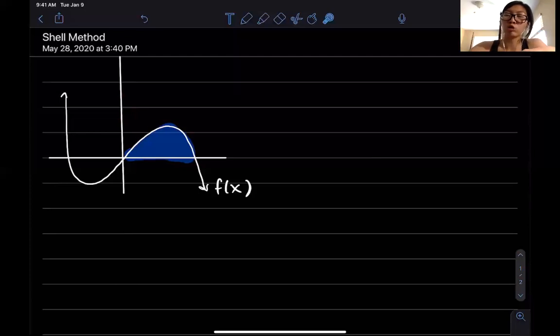The shell method says, alright, I have this cake with a hole in the middle. I'm gonna punch a hole using some type of hollow tube. I'm gonna make this tube slightly wider and wider and wider.